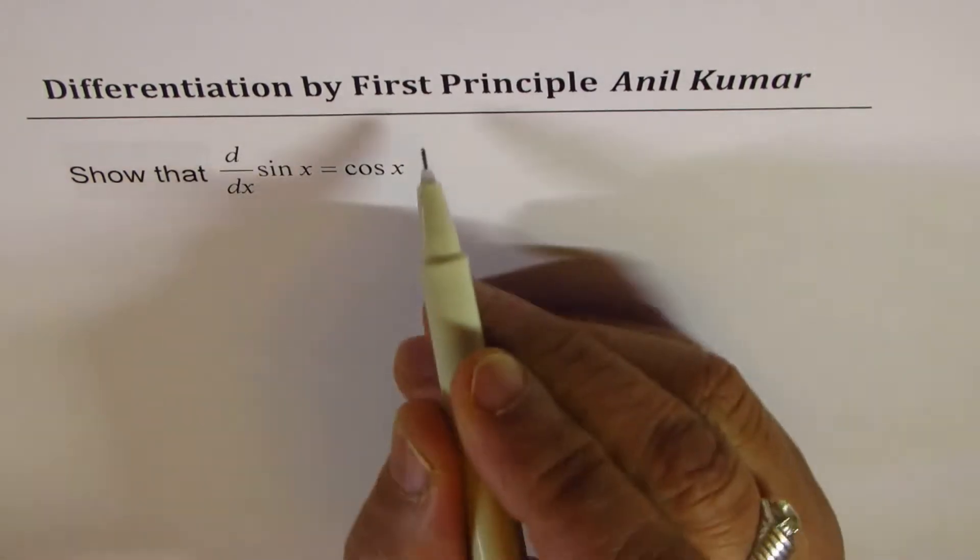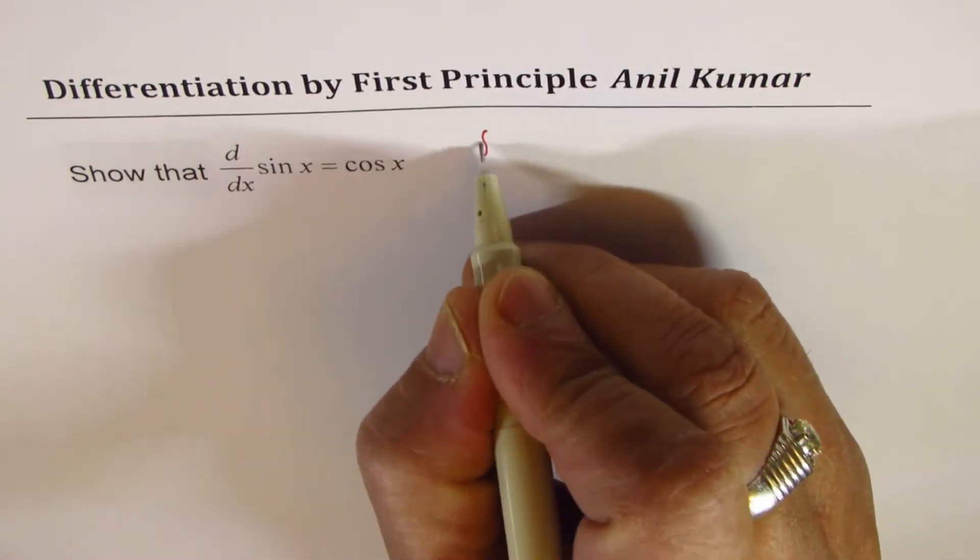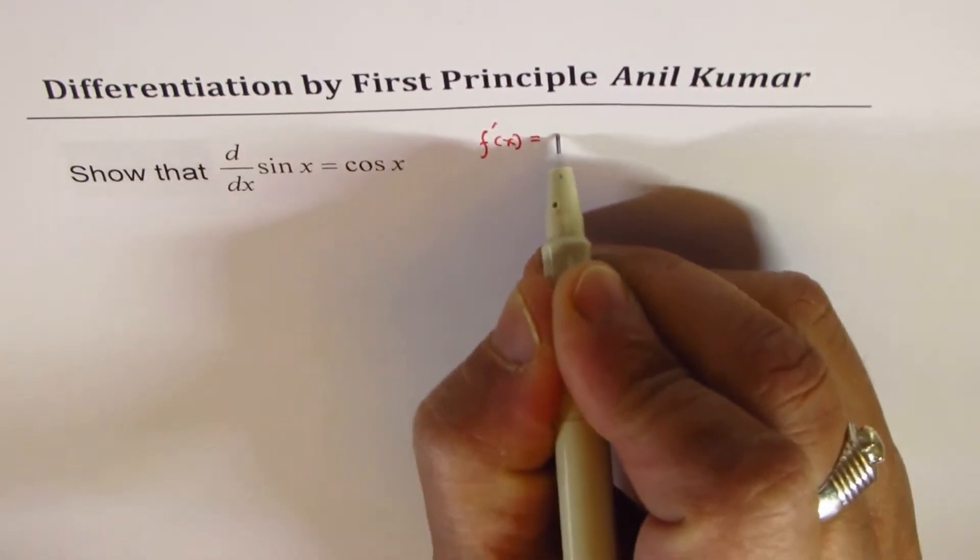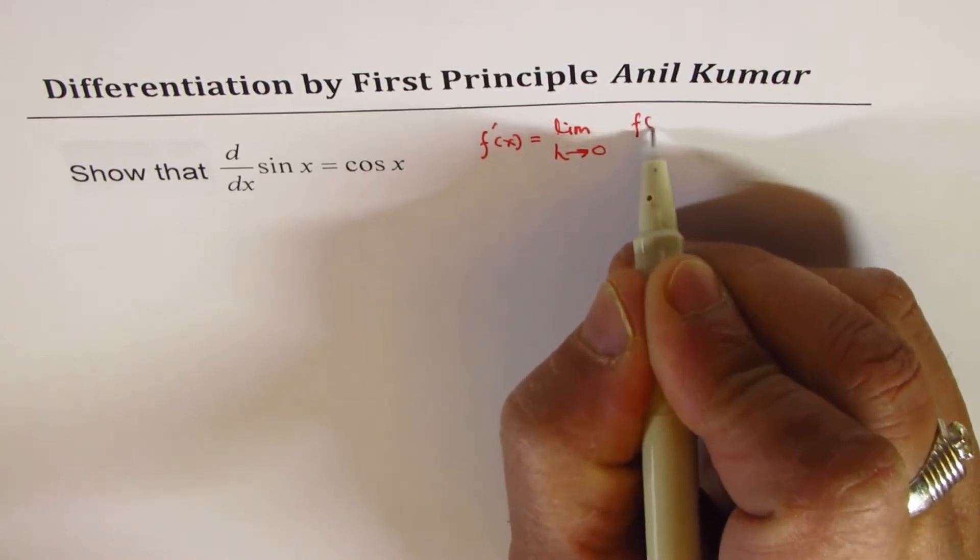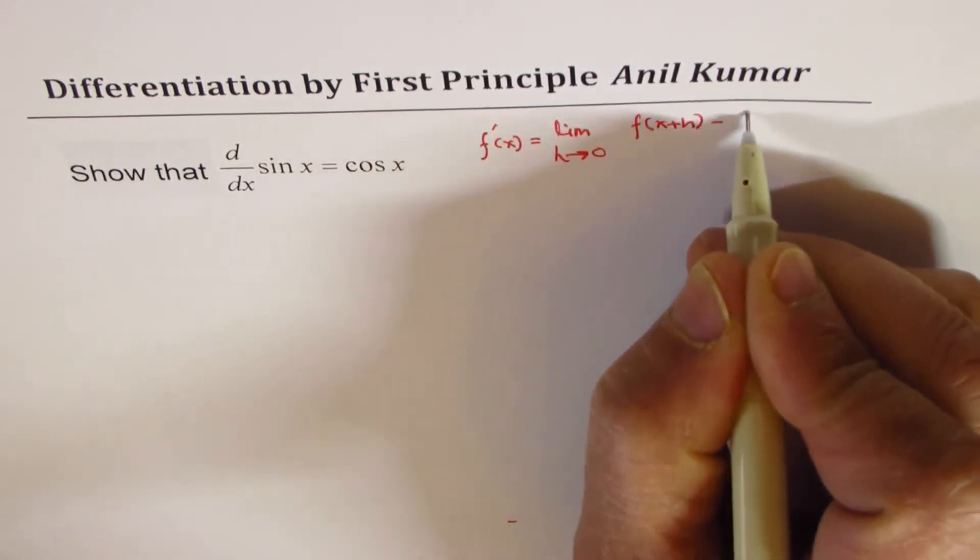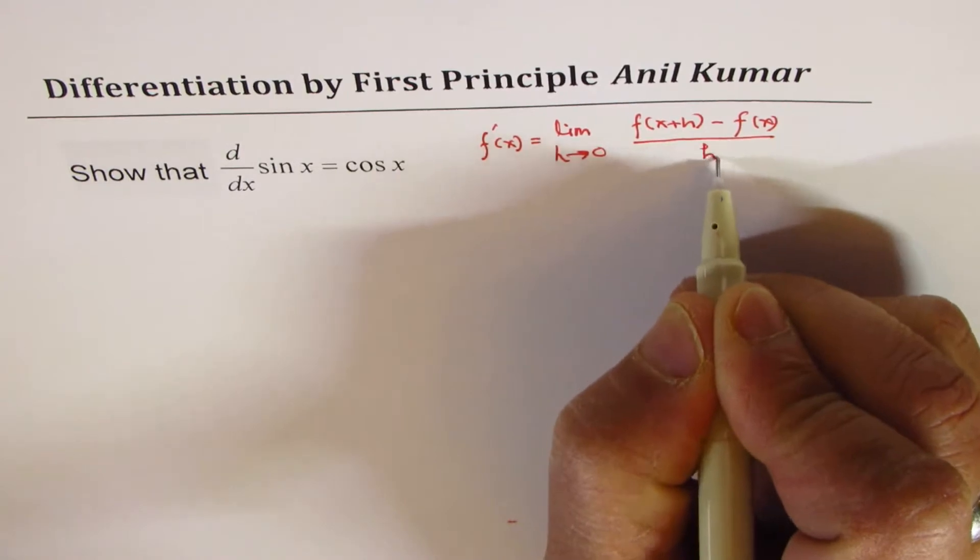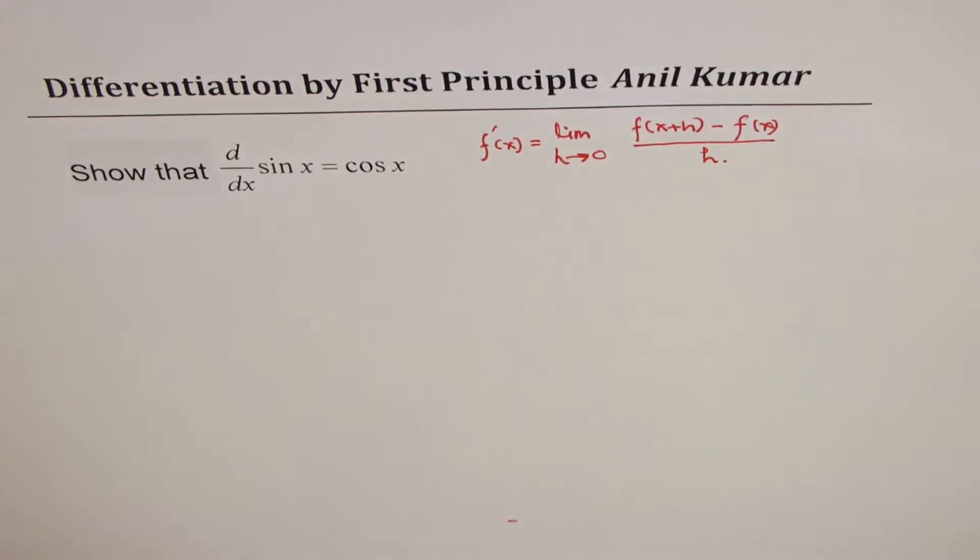When we say using first principle, it means that derivative of the function is equal to limit h approaches 0, f of x plus h minus f of x over h. That is the basic definition of a derivative, a rate of change.